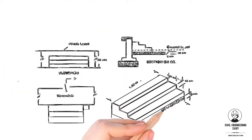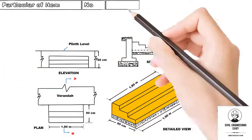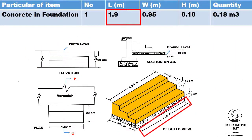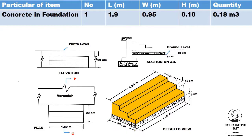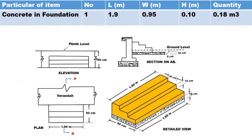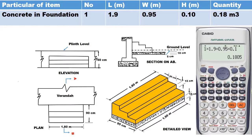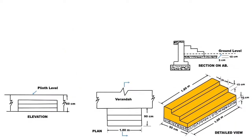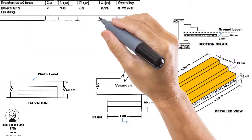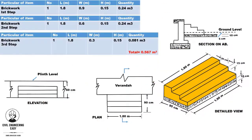To find the concrete in foundation: the length of concrete is 1.9 meter, width of concrete is 0.95 meter, and the thickness of concrete is 0.1 meter. The total concrete is 1.9 × 0.95 × 0.1, which equals 0.18 cubic meter. For the brickwork in steps, the brickwork is divided into three steps.